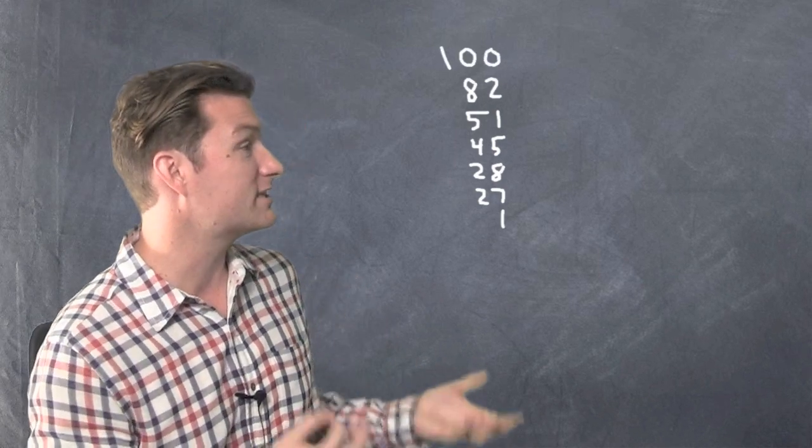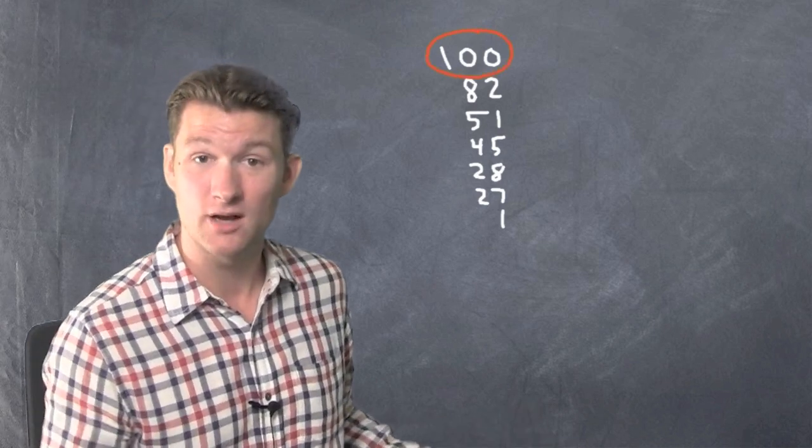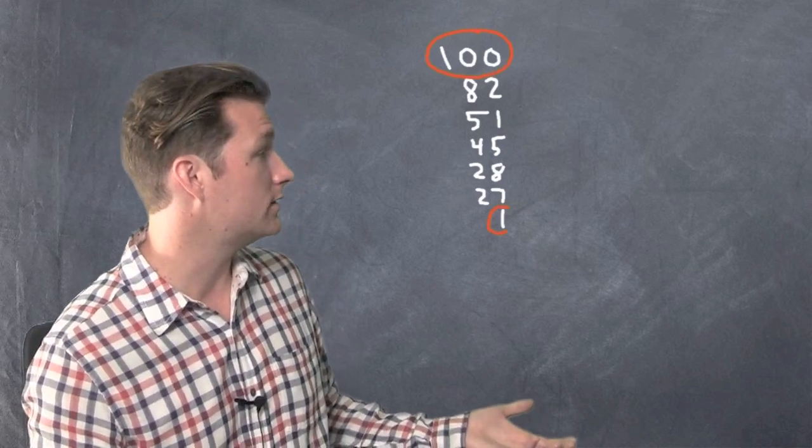Okay, look at all those numbers. What's the biggest one? Well, the biggest one is 100. And the smallest one is 1.